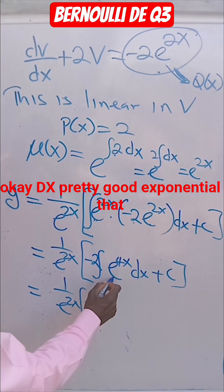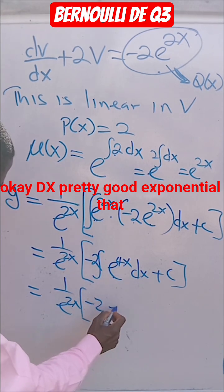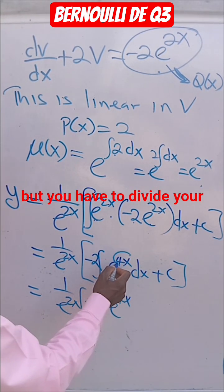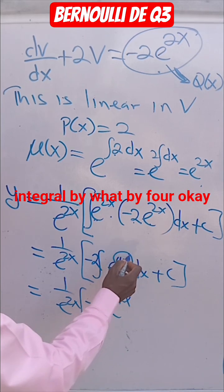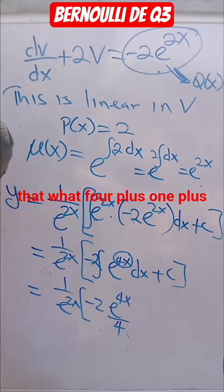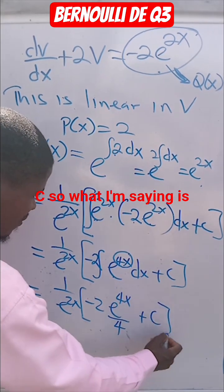dx. If you integrate exponential, that will give you exponential function, but you have to divide your integral by 4. That will be e^4x over 4, plus 1, plus C.